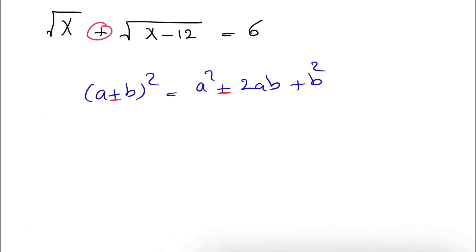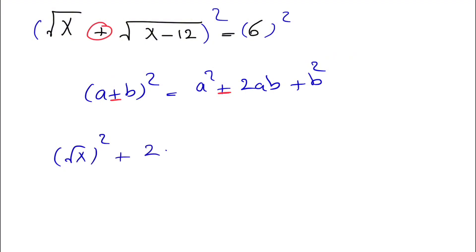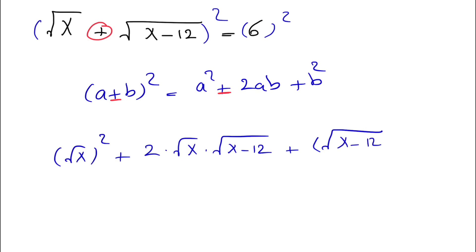So we're going to square each side. From the left side we have (√x)² plus 2 times √x times √(x−12) plus (√(x−12))², which gives us x plus 2 times √x · √(x−12) plus (x−12), and on the right side 6 times 6 equals 36.